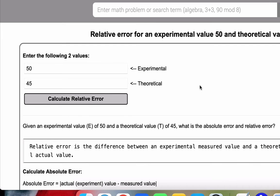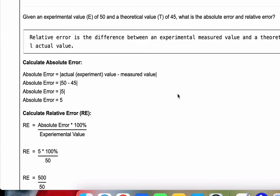When we're ready, we'll click the button. And just to run through the problem, we have an experimental value of 50 and a theoretical value of 45. And the question is, what is the absolute error and relative error?